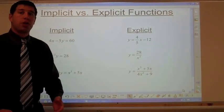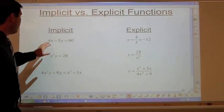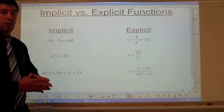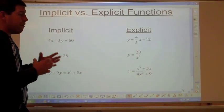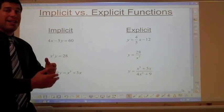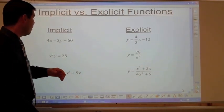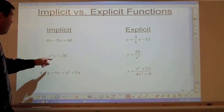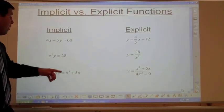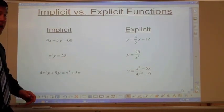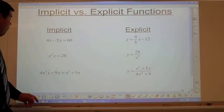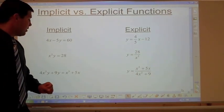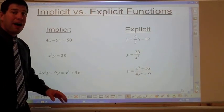Some functions are written in a form where it doesn't say y equals — where it's not f(x) or y equals strictly defined in terms of x. So you have 4x minus 5y equals 60, x squared y equals 28, or 4x squared y plus 9y equals x cubed plus 5x.